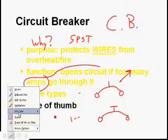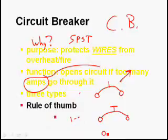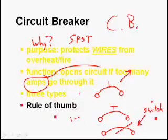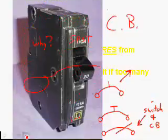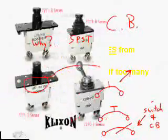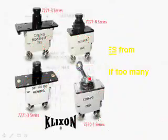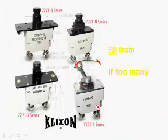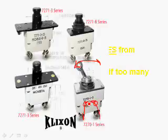The third kind is really a switch and a circuit breaker combined. It's designed so that it will pop and open the circuit if too many amps go through it, and you can also manually operate it. Here's a picture — this is a circuit breaker you can operate as a switch. If too many amps try to go through it, it'll open, and depending on the type, the switch will actually flop back over.